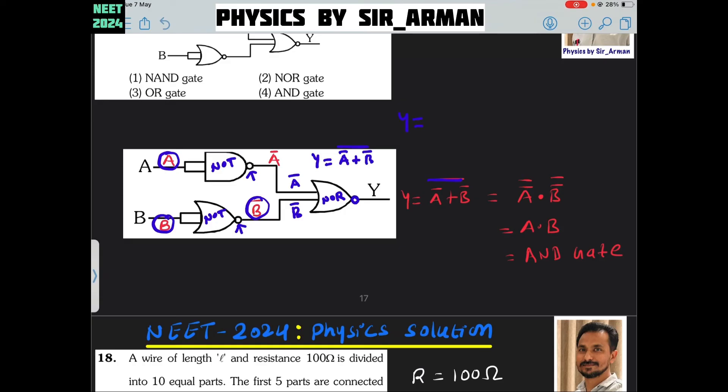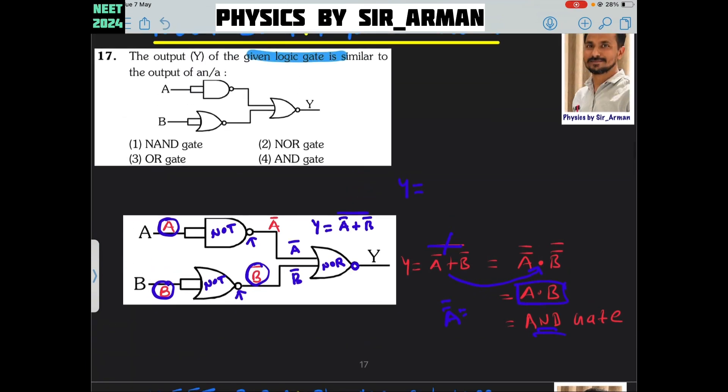Now, very easy trick: break the bar, change the sign. I have broken this bar and changed the sign from plus to dot. A double bar becomes A, and B double bar becomes B. So A dot B is similar to an AND gate. This behaves as an AND gate.